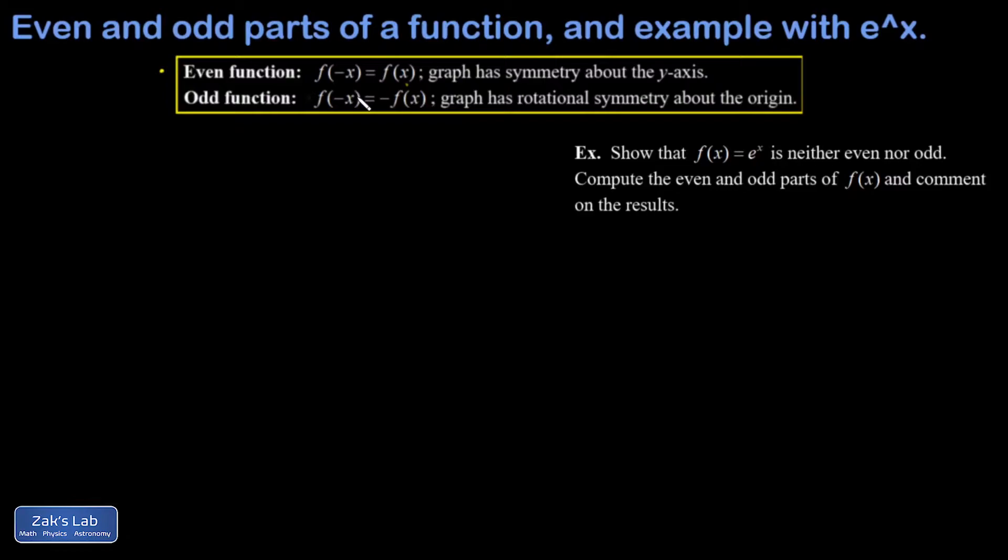An odd function is a function for which f of negative x is equal to negative f of x, and an odd function would have rotational symmetry about the origin. So now let's consider a function f of x. It's not necessarily even or odd. There's a really cool trick.